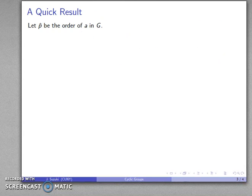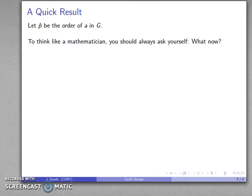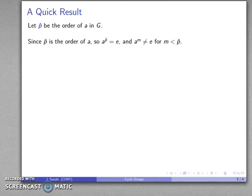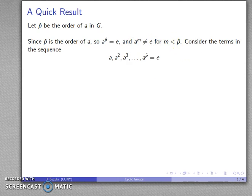Let p̂ be the order of element a in G. If you want to think like a mathematician, always ask yourself: what now? If p̂ is the order of an element, then a^p̂ = e, and a^m ≠ e for m < p̂.